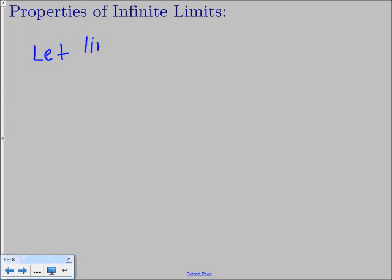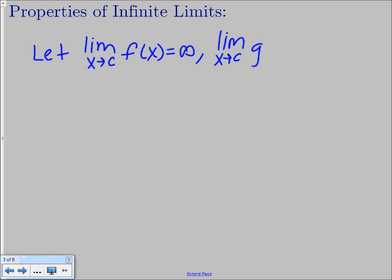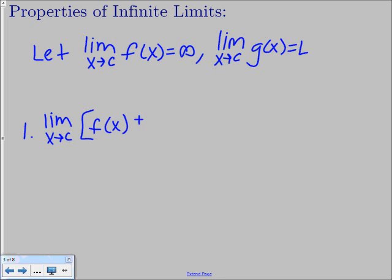To talk about these properties, we're going to let the limit as x approaches c of f of x equal infinity — our infinite limit — and let the limit as x approaches c of g of x equal some number L. The first property deals with addition and subtraction: the limit as x approaches c of f of x plus or minus g of x is just going to equal infinity. If you take infinity and add or subtract a number, you're still going to get infinity.